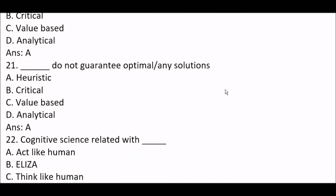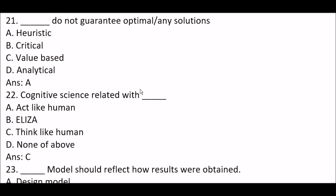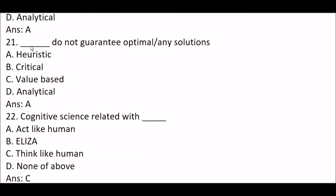Next question: blank space do not guarantee optimal or any solutions. Option A: heuristic. Option B: critical. Option C: value-based. Option D: analytical. The right answer is Option A — heuristics do not guarantee optimal or any solutions.